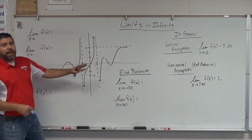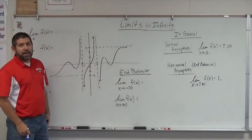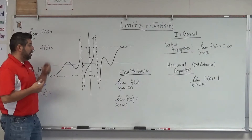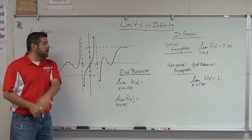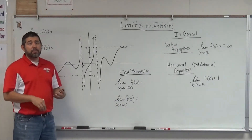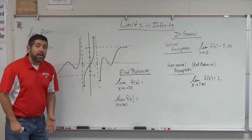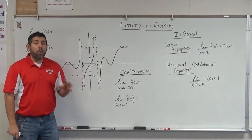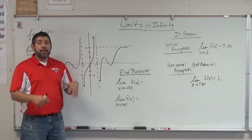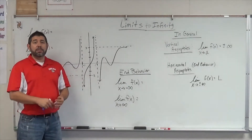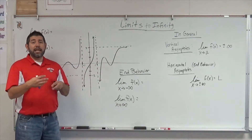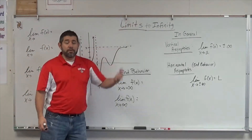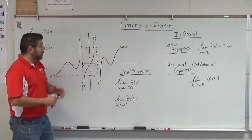Let's do the end behavior first because that's what we're talking about. End behavior is, again, horizontal asymptotes. But remember, if there are no horizontal asymptotes, then your end behavior is likely going to be negative or positive infinity because the function just goes up forever or down forever.